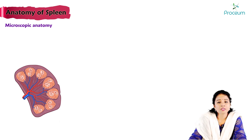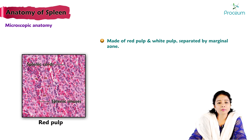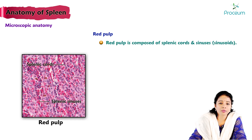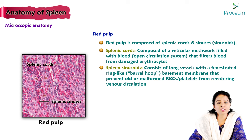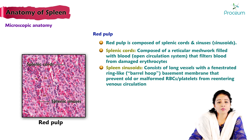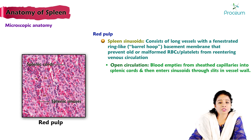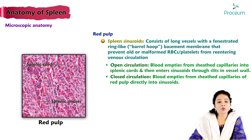Microscopic anatomy: the spleen is made up of red pulp and white pulp separated by a marginal zone. Red pulp is composed of splenic cords and sinuses. Splenic cords consist of a reticular meshwork filled with blood — an open circulation system that filters damaged erythrocytes. Splenic sinusoids consist of long vessels with fenestrated ring-like or barrel-hoop structures near the basement membrane, preventing old or malformed RBCs or platelets from re-entering the venous circulation. In open circulation, blood empties from sheathed capillaries into the splenic cords and then enters sinusoids through slits in the vessel wall; in closed circulation, blood empties directly from sheathed capillaries into the sinusoids.